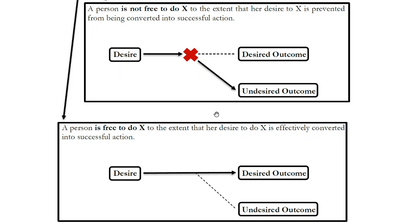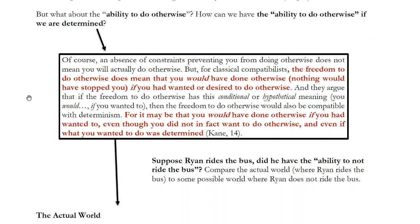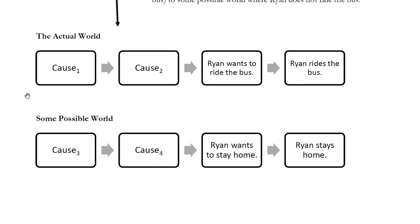We get the best of both worlds — we can talk about what it means to act freely or not be free within a scientific picture of the world where human beings are subject to physical causes. Now the third question — perhaps the most difficult one — is: remember we said that free will requires the ability to do otherwise. Compatibilists are determinists, so the future is closed. What do we mean by the ability to do otherwise in this context? Let's take an example: Ryan rides the bus. Did he have the ability to not ride the bus? Was he free in riding the bus, or was he free to have not ridden the bus?